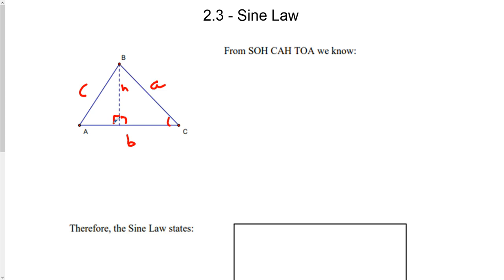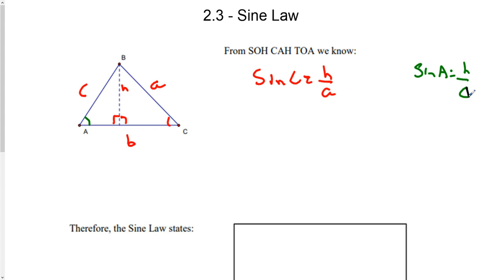If I look at angle C, I can see that the sine of C equals opposite over hypotenuse, so that would be H over A. Now looking at angle A, sine of A is once again opposite over hypotenuse — that's H over C. If I take both of these formulas and get H alone in each one, I multiply by C to get C times sine A equals H, and multiply by A to get A sine C equals H.